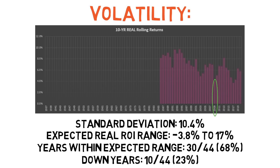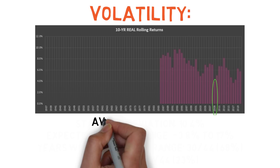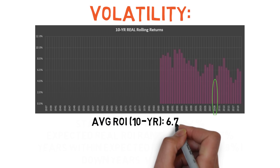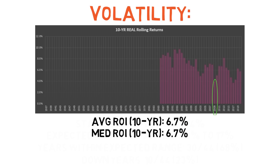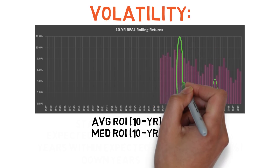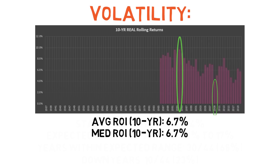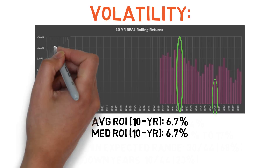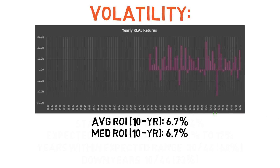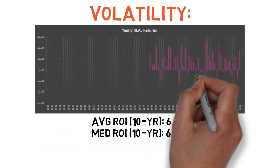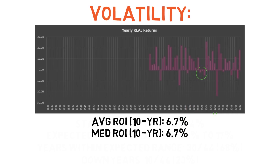The data set only goes back to 1976, which means we're missing major events like the first downturn in the 1970s and the Great Depression. But it's good to see the strategy kept its head above water during notable downturns. There was only one time the strategy failed to beat inflation more than one year in a row — from 2001 to 2003, trailing inflation by 2%, 1%, and 5% respectively. In 2004, it rose by an inflation-adjusted 25% to set a new all-time high.